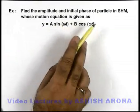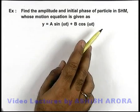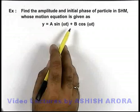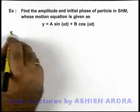In this example, we are required to find the amplitude and initial phase of the particle in SHM whose motion equation is given as y = A sin(ωt) + B cos(ωt).